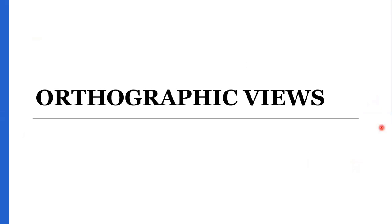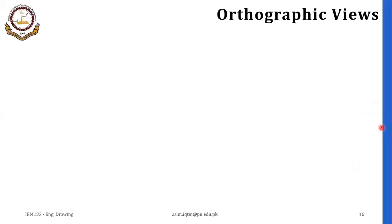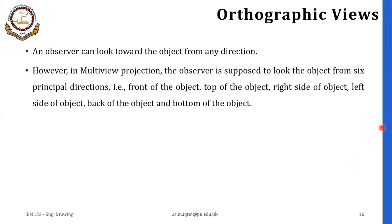Now let's move to orthographic views. An observer can look toward the object from any direction. However, in multi-view projection, the observer is supposed to look at the object from six principal directions: front of the object, top of the object, right side of the object, left side of the object, back of the object, and finally, bottom of the object.